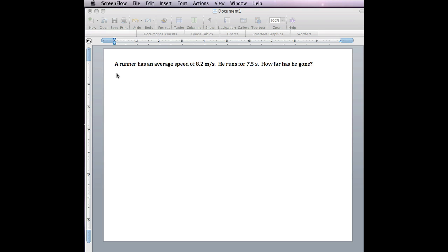This is a screencast on calculating distance. A runner has an average speed of 8.2 meters per second. He runs for 7.5 seconds. How far has he gone?